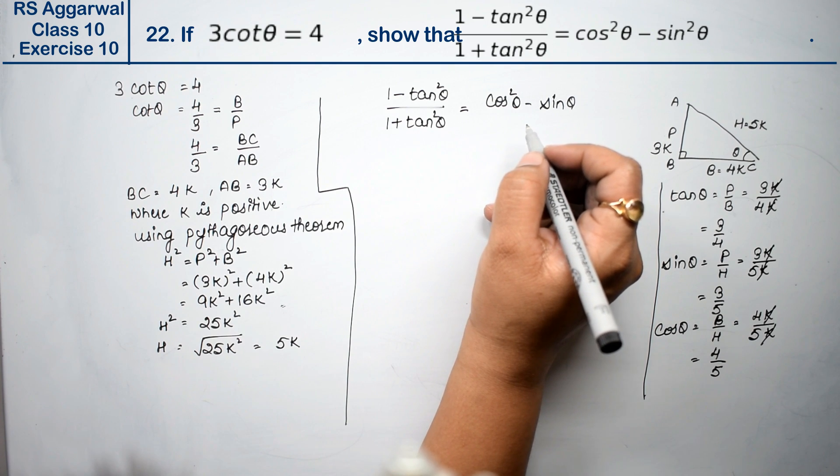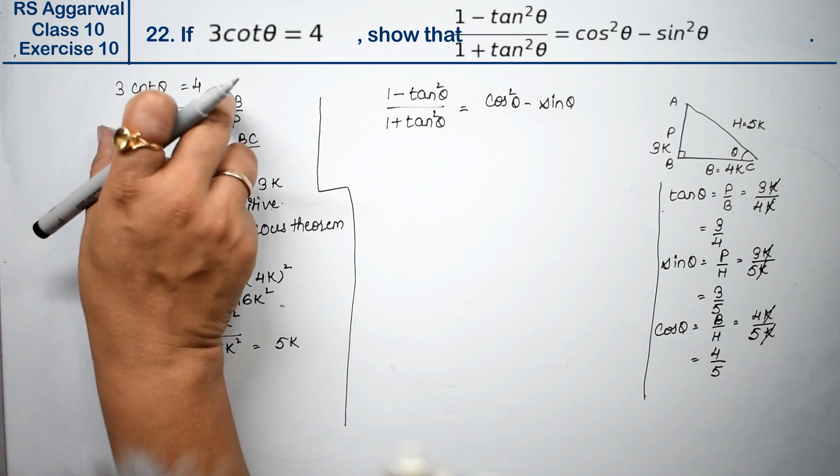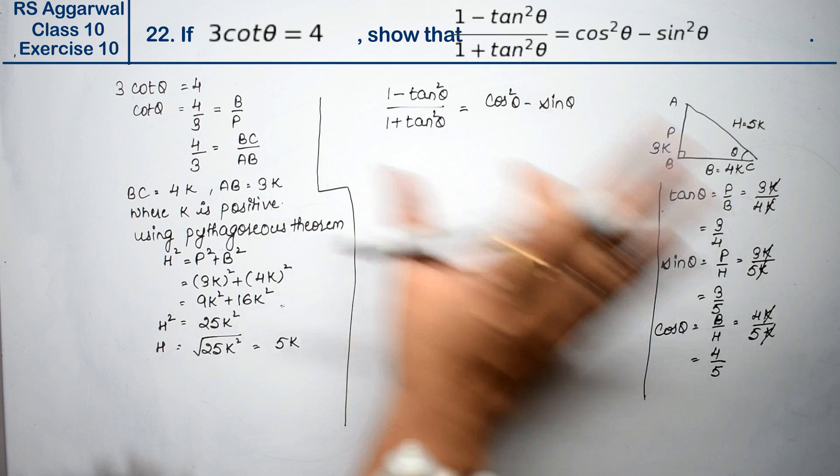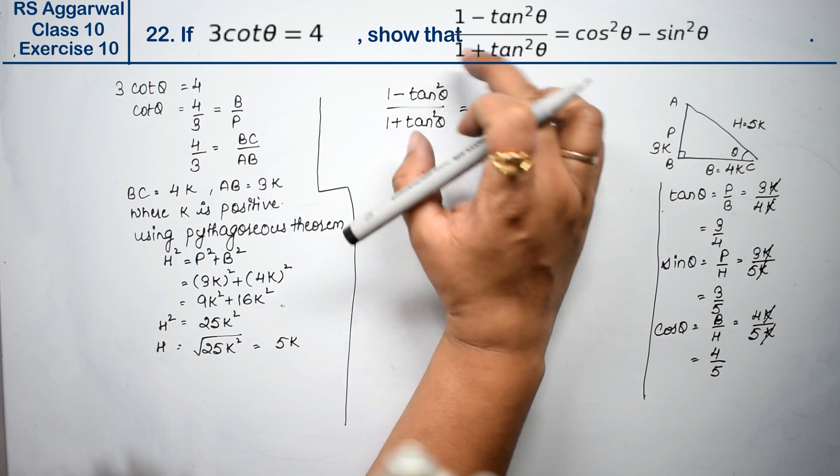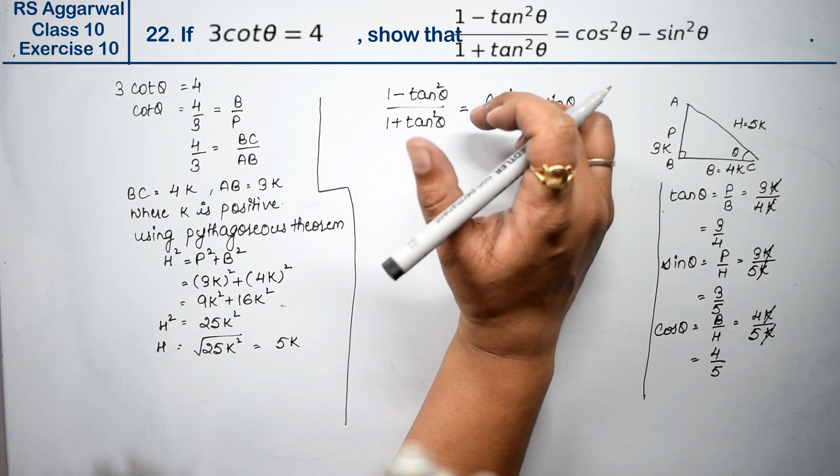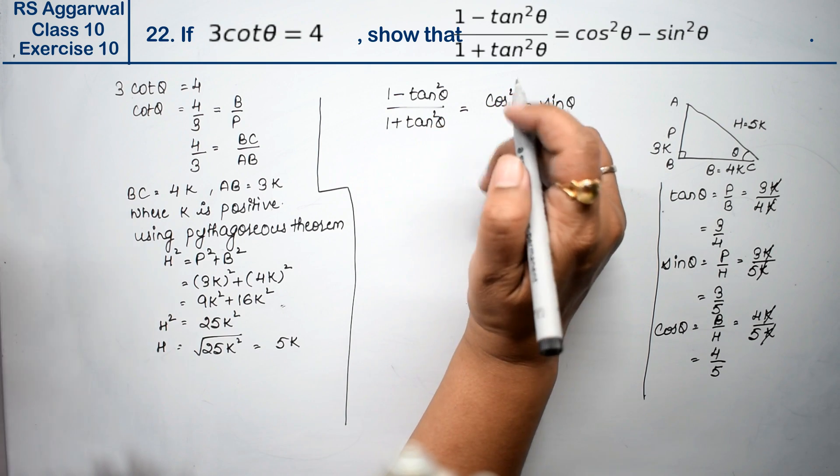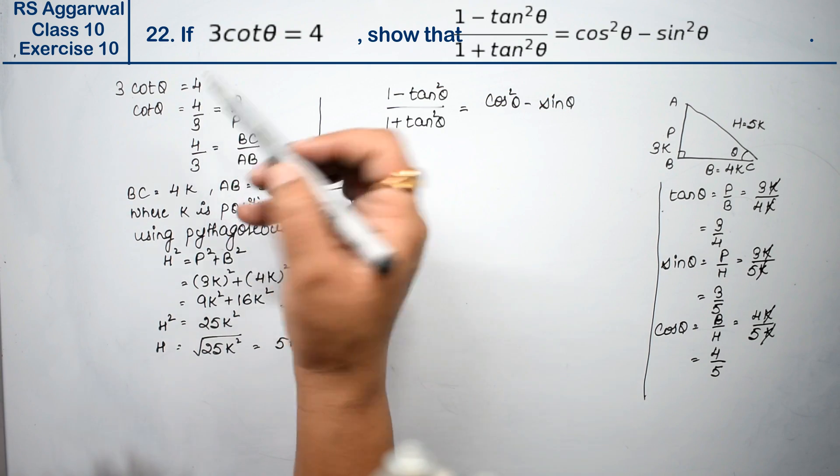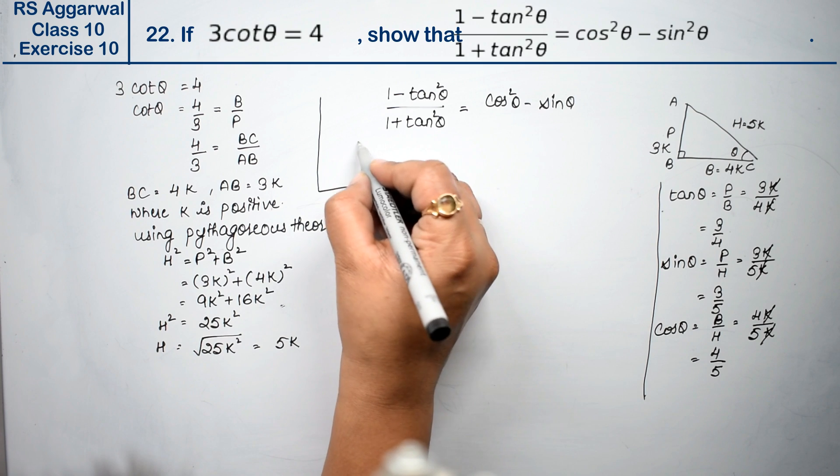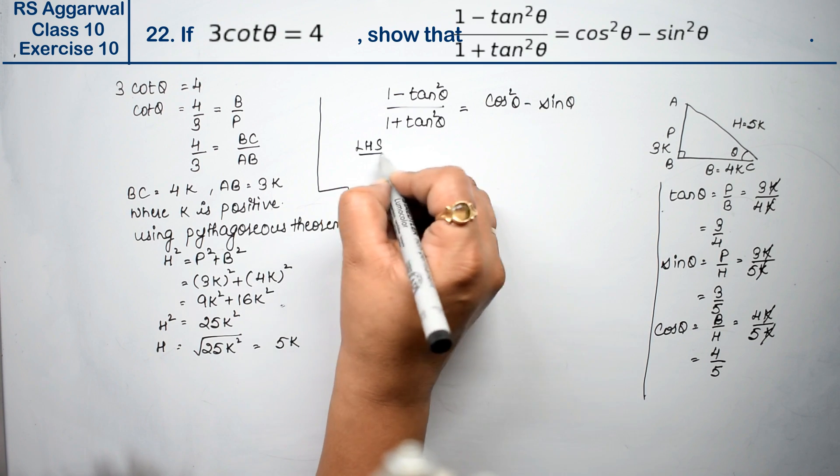We can use identity to prove this, but when we give values by this method, we will prove it. So we will prove left-hand side first.